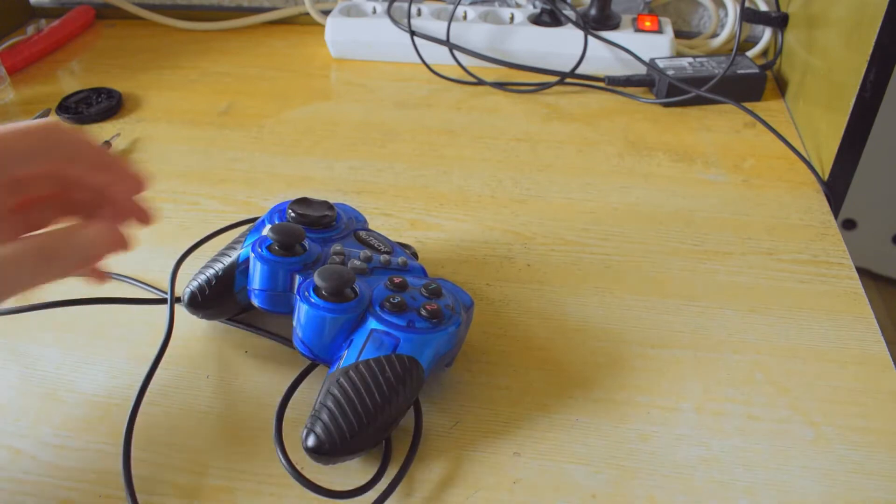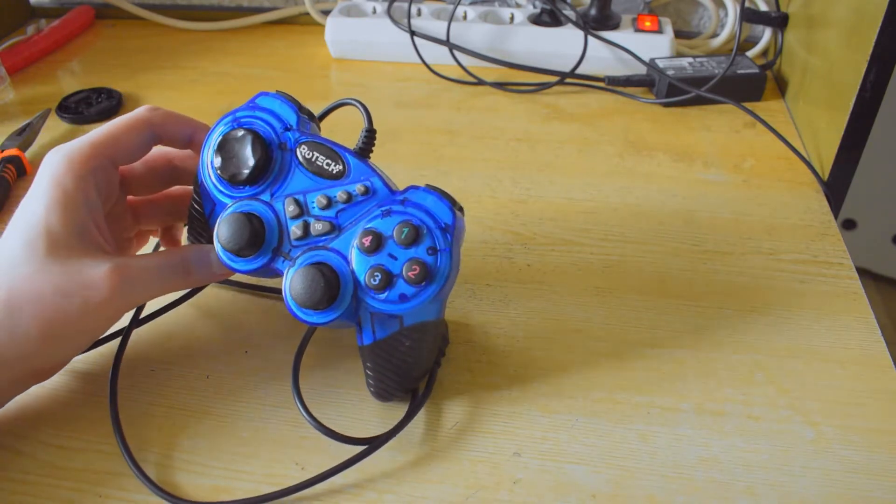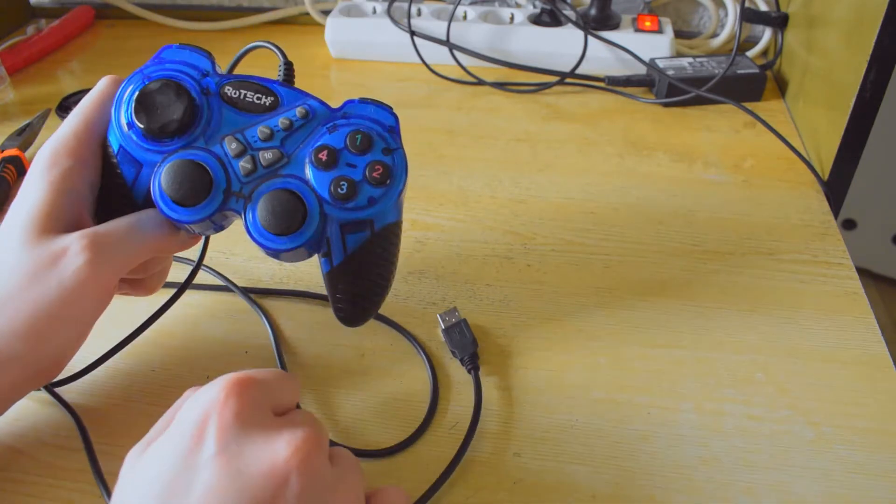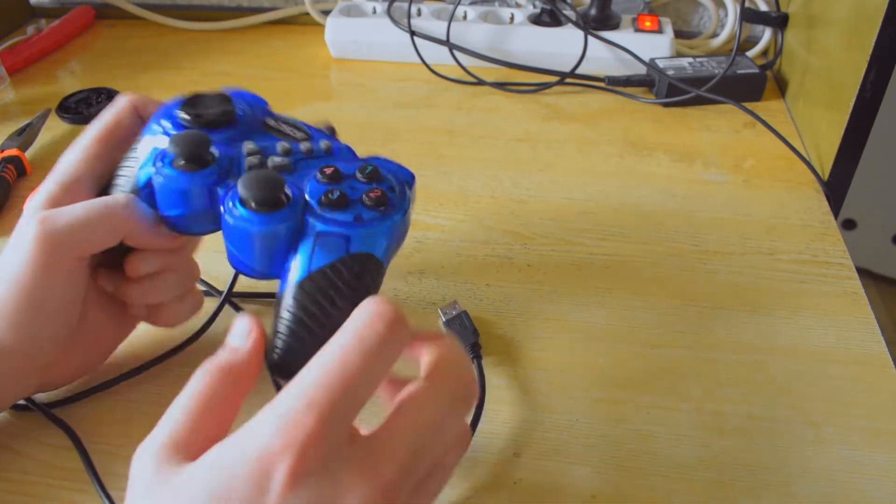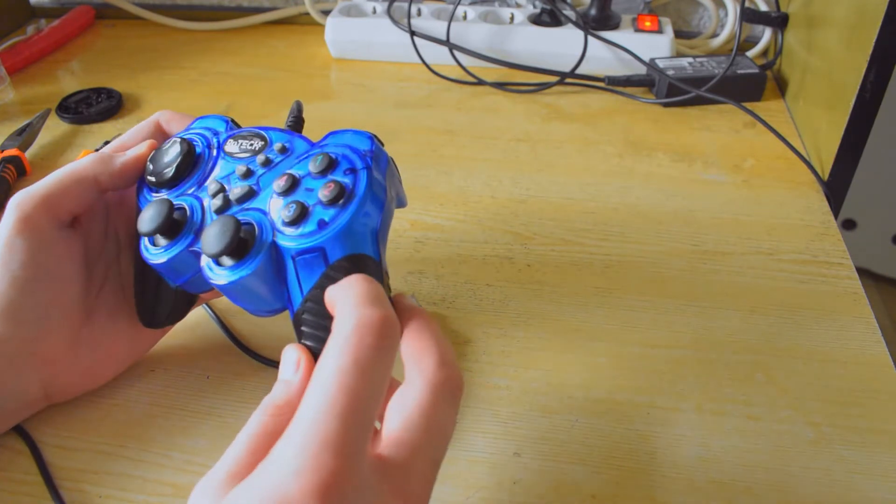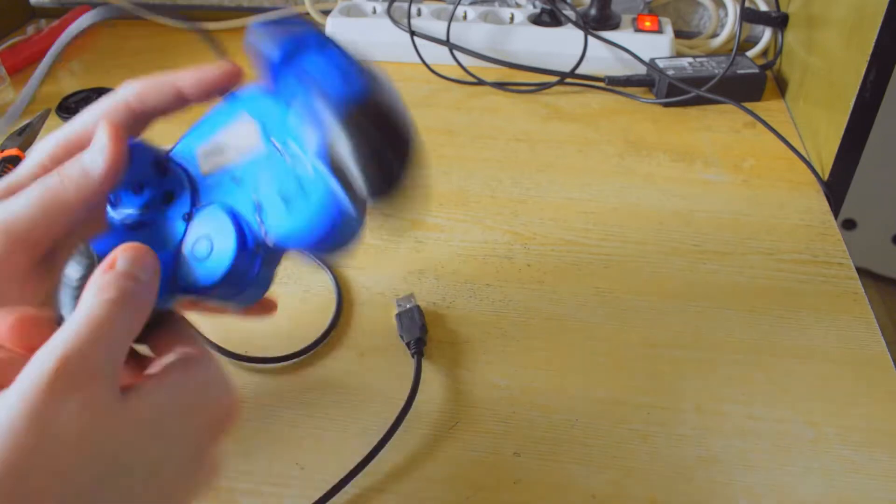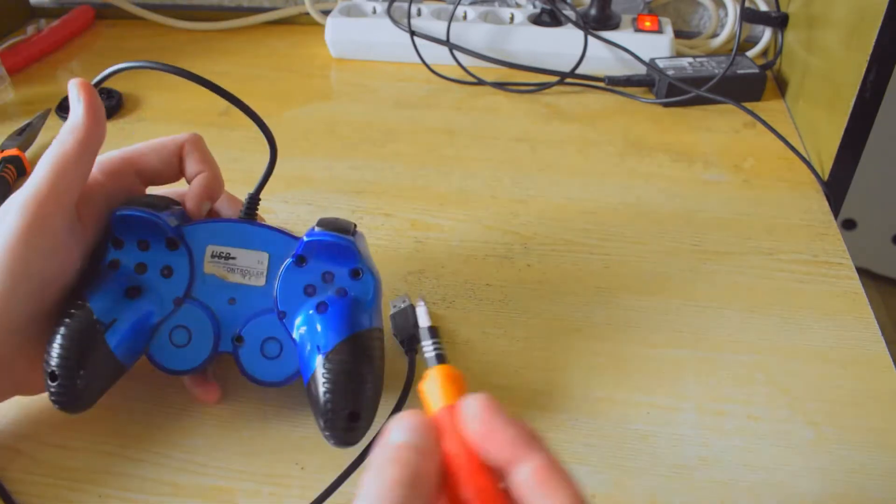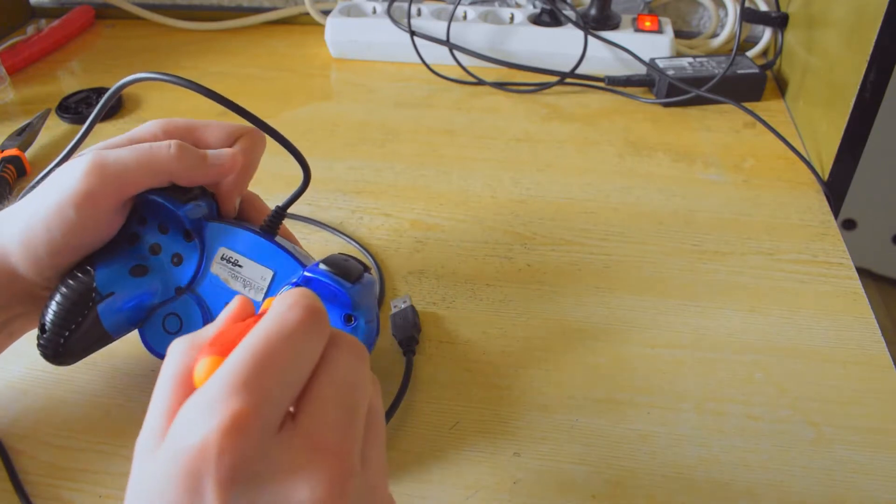I got this - one of those cheap, crappy generic USB gamepads, and it's busted. The right thumbstick doesn't work, so let's take it apart, see what can be used, what can be salvaged, and if anything has any worth in it.